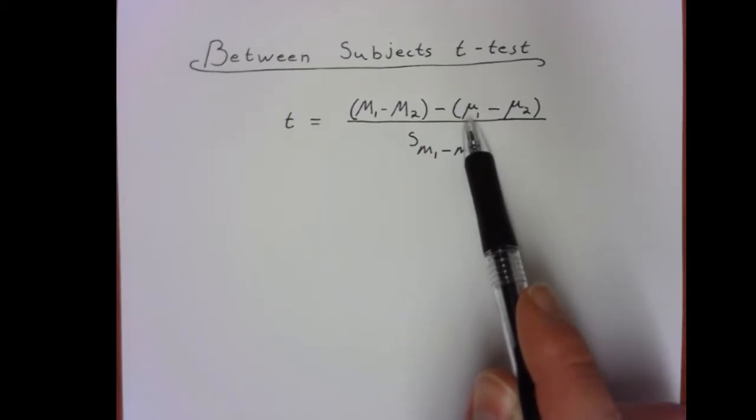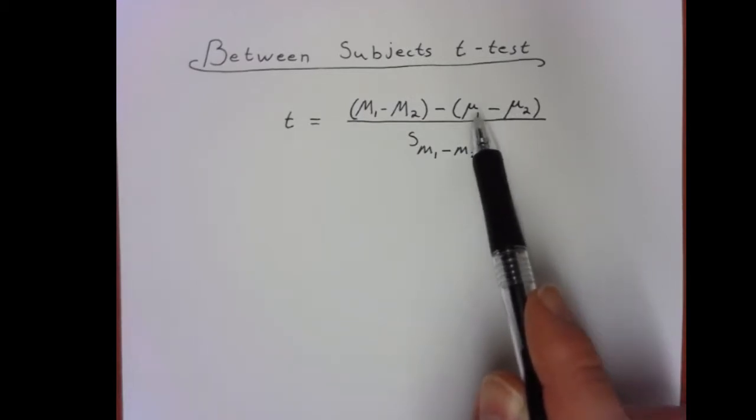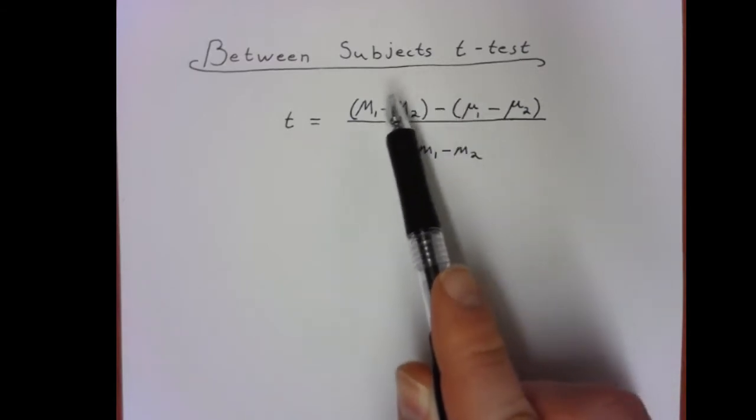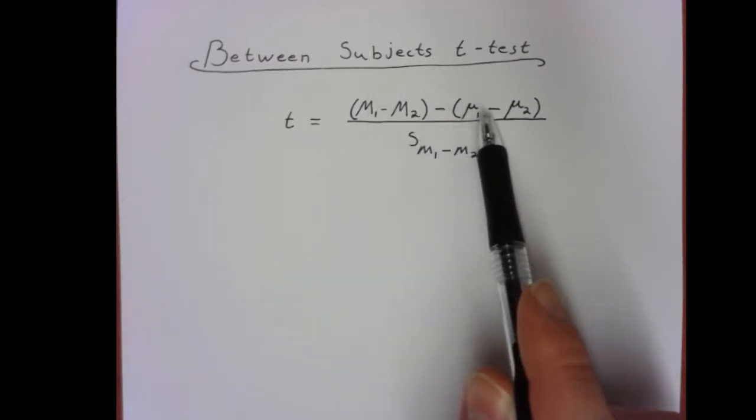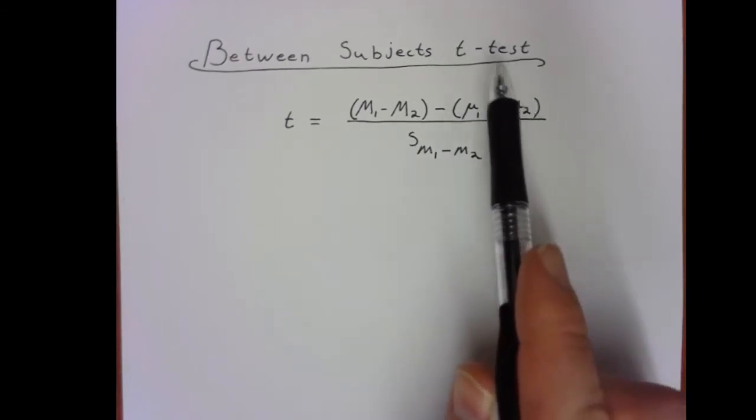Then over here we have μ1 minus μ2. I realize my Greek letters aren't that great, but play along. So we have the mean of population 1, where the mean of the population sample 1 came from, minus the mean of the population sample 2 came from.